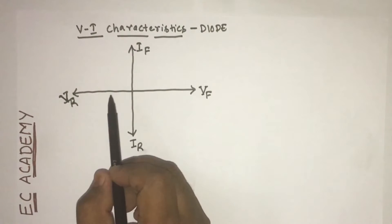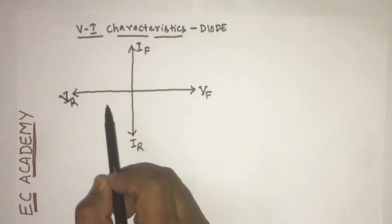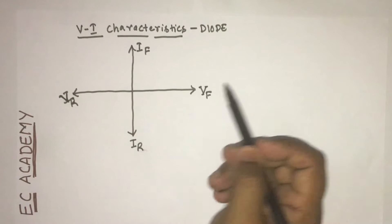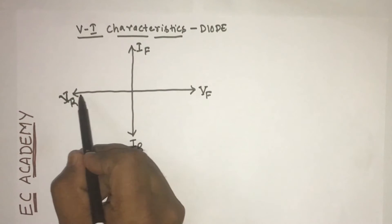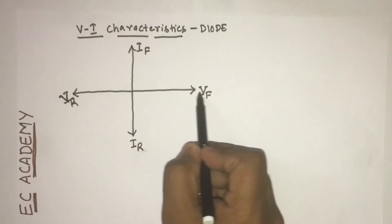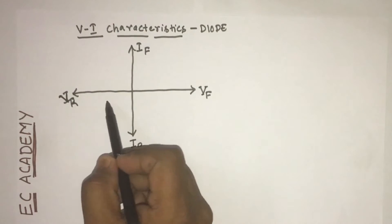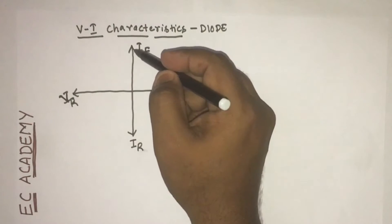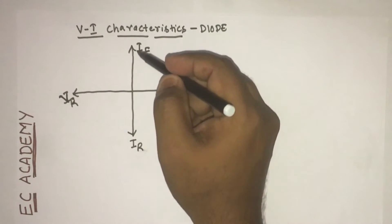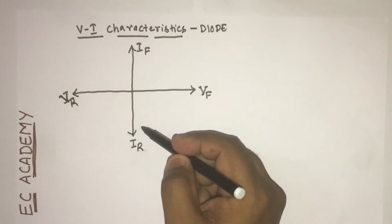VI characteristics of the diode is the plot of voltage versus current. The voltage is considered in the x-axis and the current is considered in the y-axis, as you can see here.